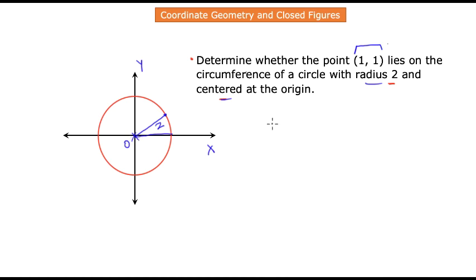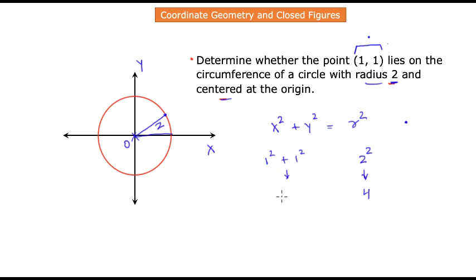From our circle discussion, the formula for a circle centered at the origin is x² + y² = r². Our given point has coordinates (1, 1), so we compute 1² + 1² = 2. The radius is 2, so r² = 4. Since 2 is not equal to 4, this specific combination of coordinates does not satisfy the circle equation, and we conclude that point (1, 1) does not lie on the circle. That was the purpose of understanding how to apply coordinate geometry principles to closed figures.